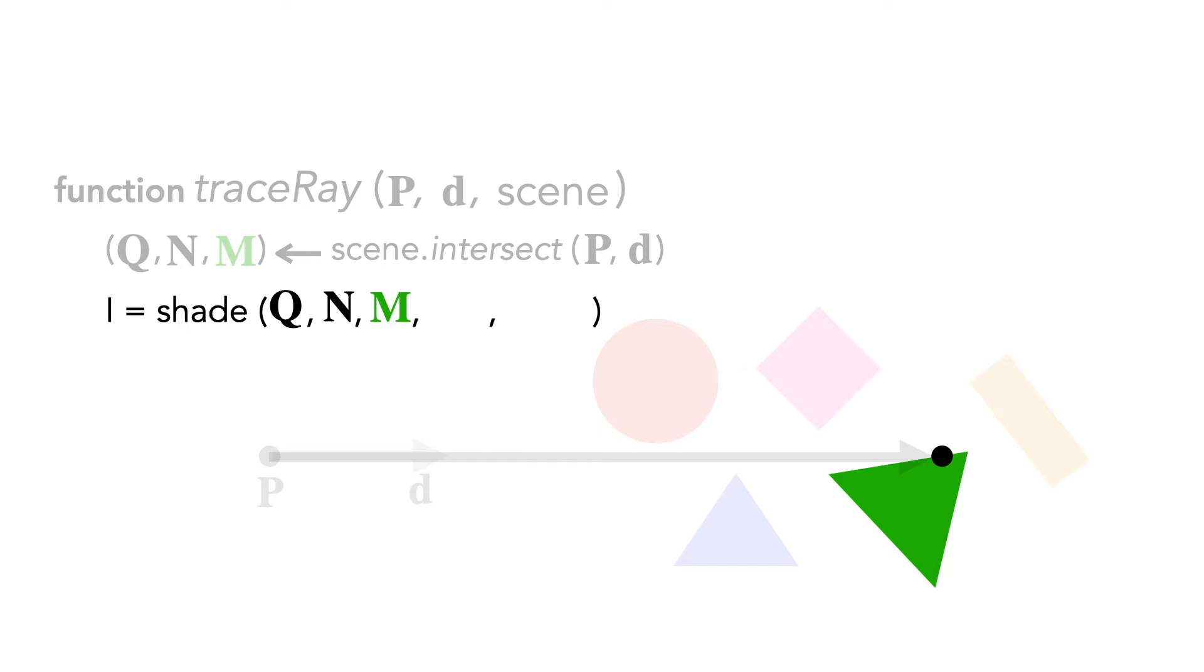This function requires a bit more information. The vector from the eye, as will the direction to the light source, and any other objects that could shadow Q. So we'll pass in the scene as an additional parameter. Finally we'll return the result.